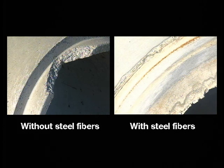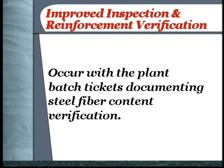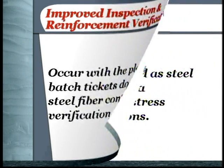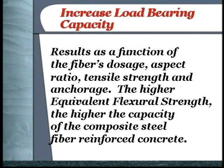In closing, let's review again the major advantages of the use of steel fibers in concrete. Homogenous distribution yields fibers mixed throughout the precast product, ensuring excellent reinforcement at the joints and the corners. Improved inspection and reinforcement verification occur with the plant batch tickets documenting steel fiber content. Multi-directional reinforcement is accomplished as steel fibers provide resistance to stress in all directions. Increased load bearing capacity results as a function of the fiber's dosage, aspect ratio, tensile strength, and anchorage. The higher the equivalent flexural strength, the higher the capacity of the composite steel fiber reinforced concrete.